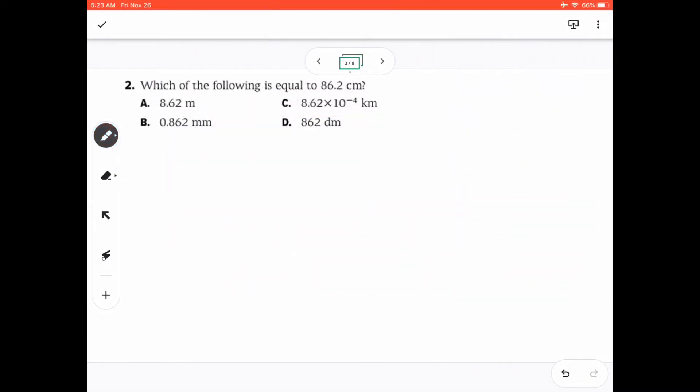Question 2. Which of the following is equal to 86.2 cm? Basically, this question is about conversion. So we're going to convert 86.2 cm to meters, millimeters, kilometers, and decimeters. The thing is, you can actually do this easily in your calculator, but for discussion's sake, we are going to do it the long way.